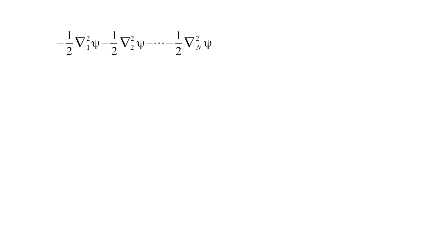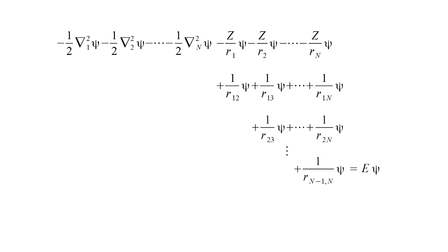The Schrödinger equation for n electrons has a kinetic energy term for each electron, a nuclear attraction term for each electron, and repulsion terms for every pair of electrons, one-half n times n minus one in all.